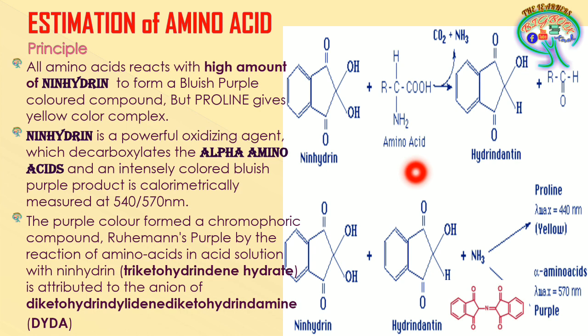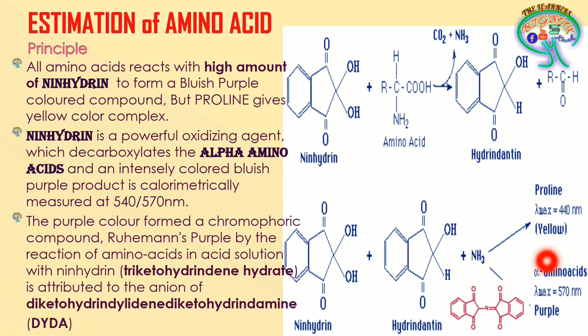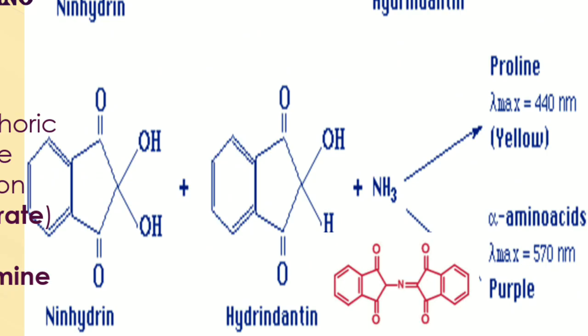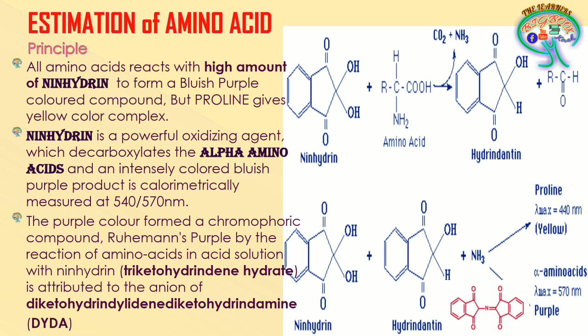Further in the reaction, excess ninhydrin reacts with the hydrindantene to form a complex. Proline gives a yellow color while all other alpha amino acids give a bluish-purple color complex. This bluish-purple complex is measured colorimetrically at 540 or 570 nanometers — in certain labs either wavelength may be used depending on convenience.